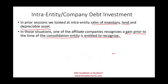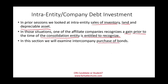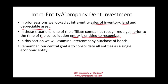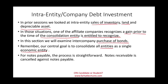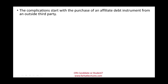In this session, we're going to be focusing on intra-company purchase of bonds — when one company buys the bond of another company. When we do consolidation, the central goal is to consolidate all entities as one single economic entity. The complication starts with the purchase of an affiliate's debt instrument from an outside party, which is where debt investments get more complicated.